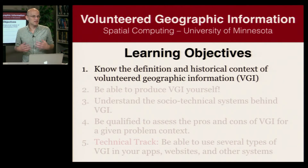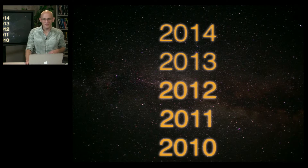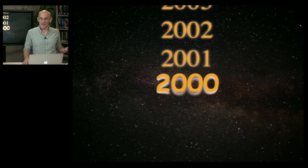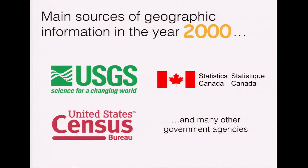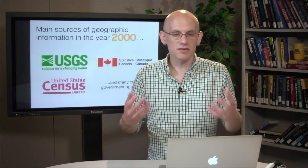Let's talk about the definition and historical context of VGI. To do so, let's hop in a time machine and go back to the year 2000, which was in the pre-Volunteer Geographic Information era. Back in 2000, if you were someone who needed geographic information — for instance an environmental scientist, a geographer, a marketing analyst, an urban planner, a civil engineer — you would likely turn to government agencies like the United States Geological Survey or the United States Census here in the U.S., Statistics Canada in Canada, and so on.